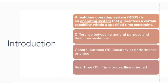You can classify operating systems into two categories: general purpose operating system and real-time operating system. A general purpose operating system — for example, Windows — gives more importance to accuracy of performance. A real-time operating system — for example, Linux or Ubuntu — gives more importance to time and deadline.